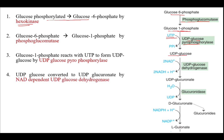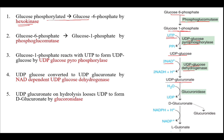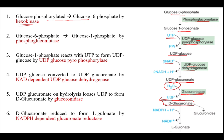UDP-glucose is converted to UDP-gluconate by NAD-dependent UDP-glucose dehydrogenase. UDP-gluconate on hydrolysis loses UDP and forms D-gluconate in the presence of the enzyme glucuronidase. This D-gluconate is then reduced to L-gulonate by NADPH-dependent glucuronate reductase.